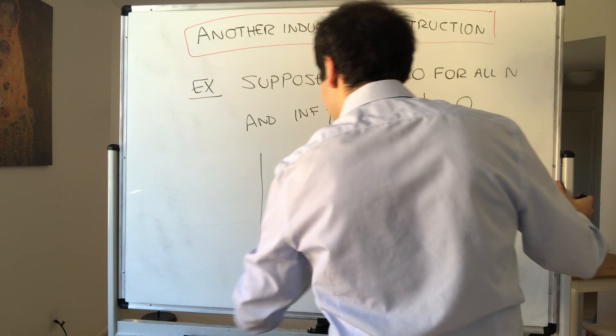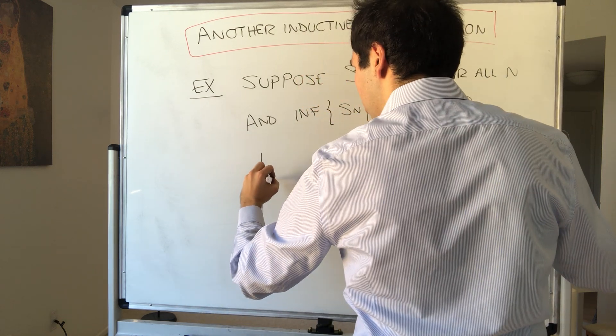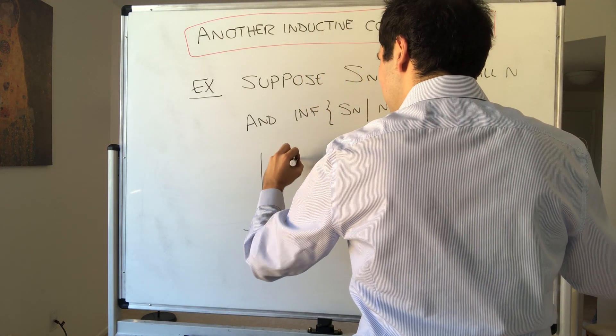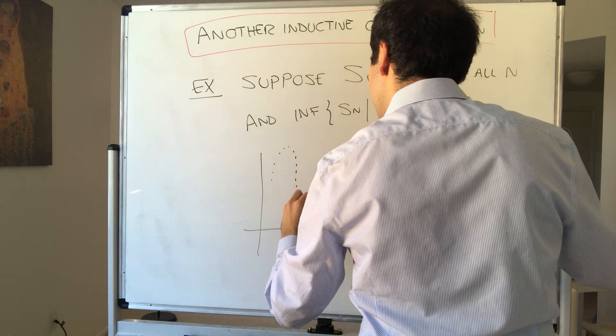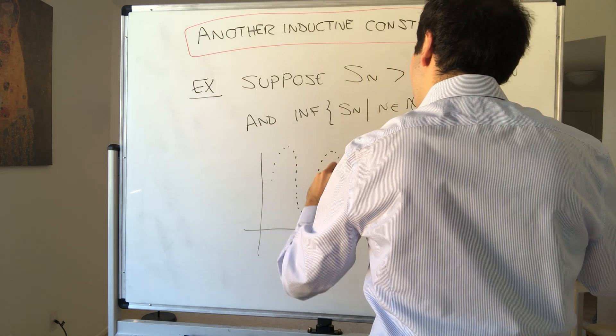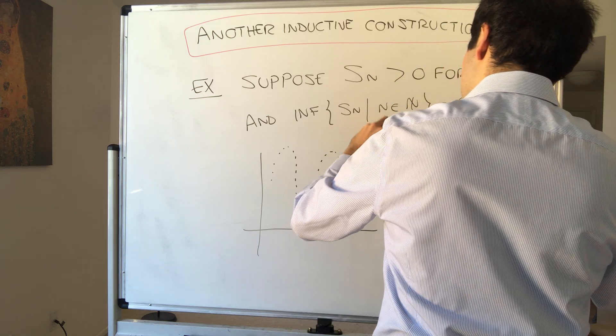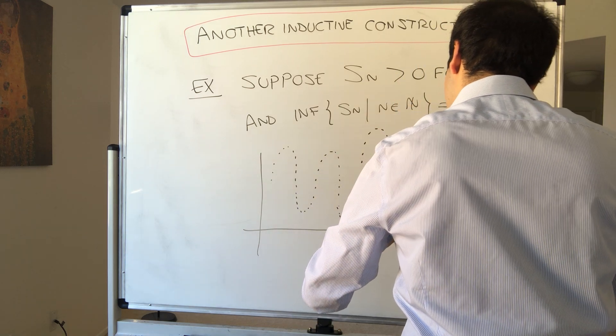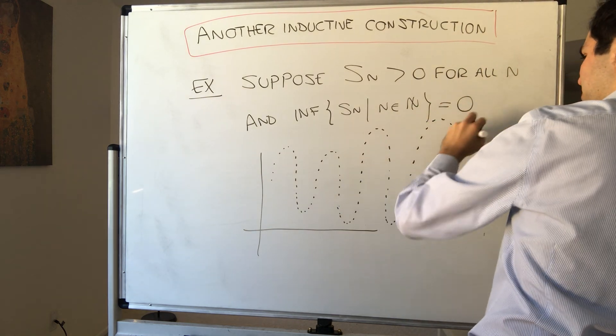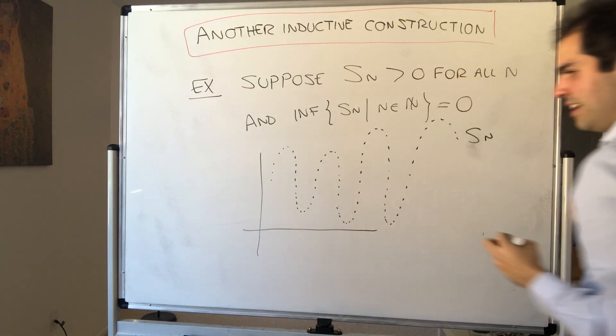So consider the following sequence like that. So you have positive terms, but even though it doesn't necessarily go to zero, at least the smallest value goes to zero. So kind of like that, almost like a roller coaster.